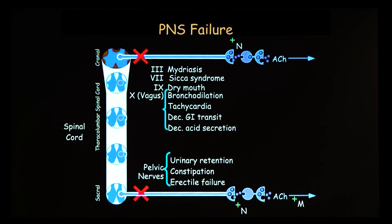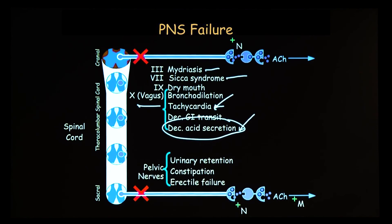Parasympathetic nervous system failure presents completely differently — it's a different syndrome. You have mydriasis. Sicca syndrome means dry mouth and dry eyes. Because of the withdrawal of vagal outflow, there's an increase in heart rate. There's decreased ability to secrete acid — this is part of the reason why vagotomy has been used for treating peptic ulcer disease for a long time. From the point of view of the splanchnic parasympathetic innervation, there's constipation — a classic symptom of parasympathetic inhibition.